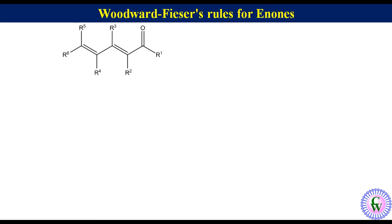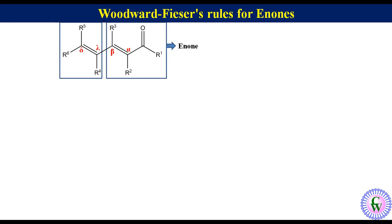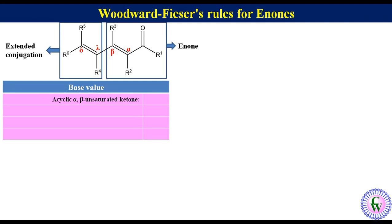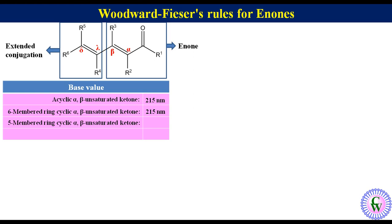Let's start with the structure of a hypothetical molecule. The main functional group is the keto group; the carbon adjacent to the keto group is alpha, then beta, gamma, and delta. This part of the molecule is called an enone, and this is extended conjugation. We will now discuss Woodward-Fisher rules for enones. The base values are: for an acyclic alpha-beta unsaturated ketone, 215 nm; for a six-membered ring cyclic alpha-beta unsaturated ketone, 215 nm; and for an alpha-beta unsaturated aldehyde, 210 nm.